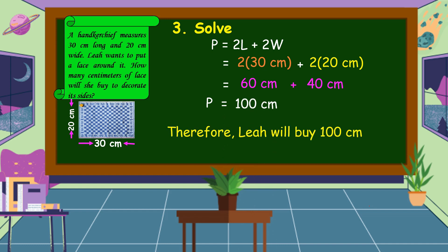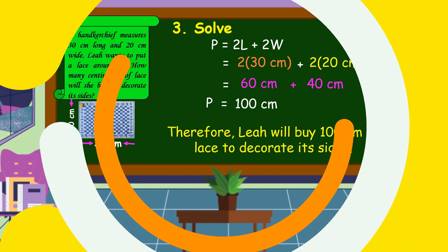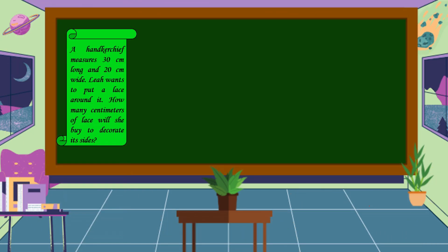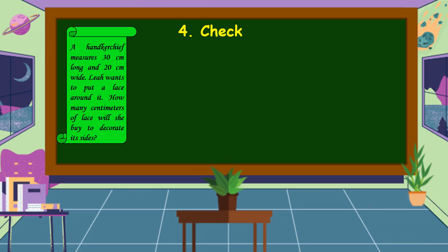Therefore, Leia will buy 100 centimeters of lace to decorate its sides. We already solved the problem. The last step is we're going to check.